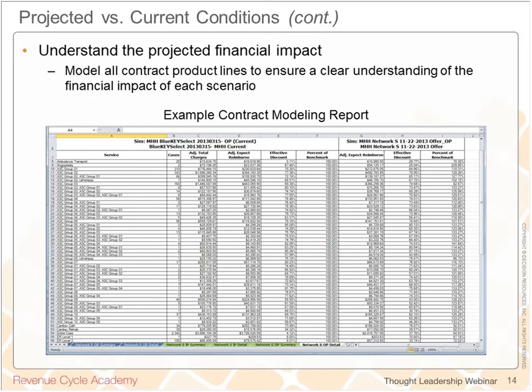Organizations must do their homework, which includes modeling the actual contract terms — really modeling all plans, all product lines, and understanding the results in a side-by-side fashion. In the Excel view that you see on screen, this is an example that organizations should look to incorporate, where you're taking into account the various plans, breaking out your modeling result for both inpatient and outpatient.